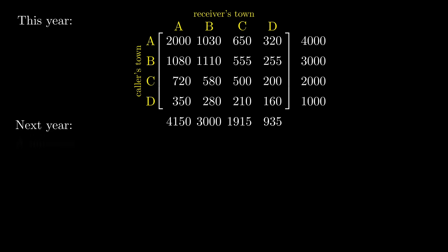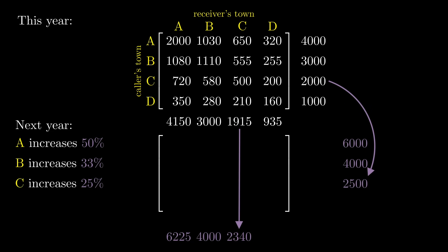more households will have telephones. In town A, the number of households with a telephone is projected to increase 50%. So, we expect the total number of outgoing calls from town A to increase 50% to 6,000. The total number of incoming calls to town A should also increase 50% to 6,225. In the other towns, telephone adoption is projected to increase 33% in town B, 25% in town C, and remain the same in town D. From this information, can we determine the number of peak hour calls between each pair of towns next year? In other words, what are the entries in next year's table?